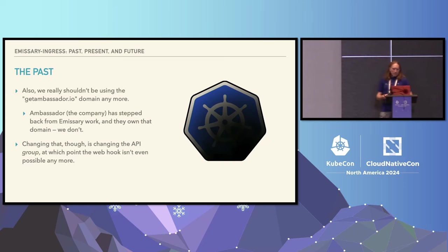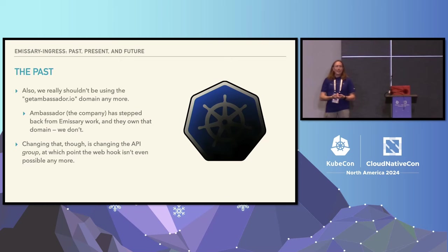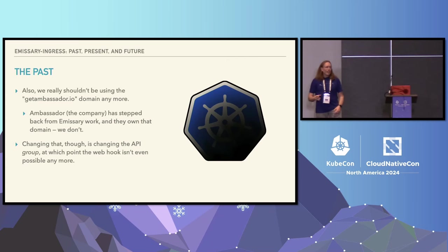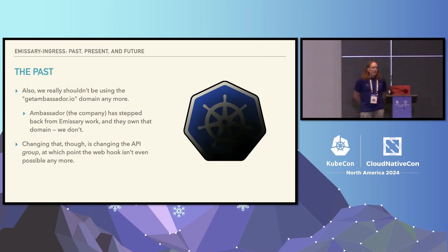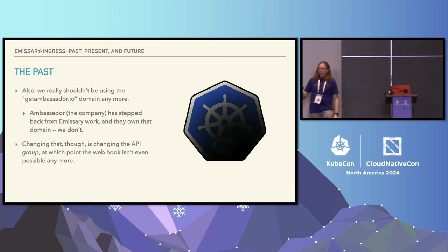Another thing we run into is that we really shouldn't be using the getambassador.io domain anymore. The API version in those CRDs starts with getambassador.io. The company Ambassador, which pretty much funded Emissary's development for the first many years, is pulling away from this — they own getambassador.io and Emissary does not. Changing that bit in the API version means we're changing the API group, and everything about conversion webhooks ceases to be a factor, which is good, but it also means runtime conversion is not possible in any meaningful way, and we have to talk about migrations.